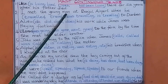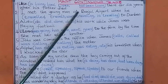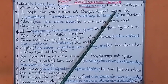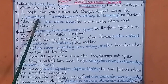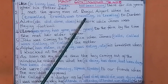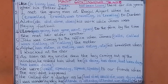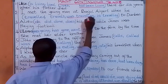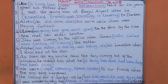Number two: I met the young man at Banjul International Airport when he — traveled / was traveling / is traveling — to Durban. The answer: I met the young man when he was traveling to Durban, South Africa.